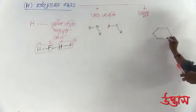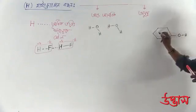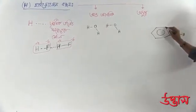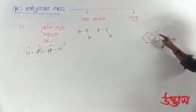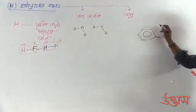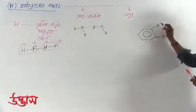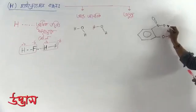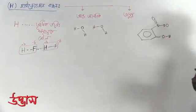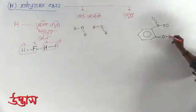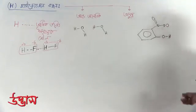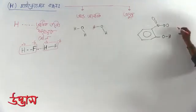For example, we said that ortho-nitrophenol consists of a phenol group and a nitro group in the ortho position. This means the nitro group is at the ortho position relative to the phenol. When we have the phenol OH group and the nitro oxygen in proximity, we start working with hydrogen bonding.